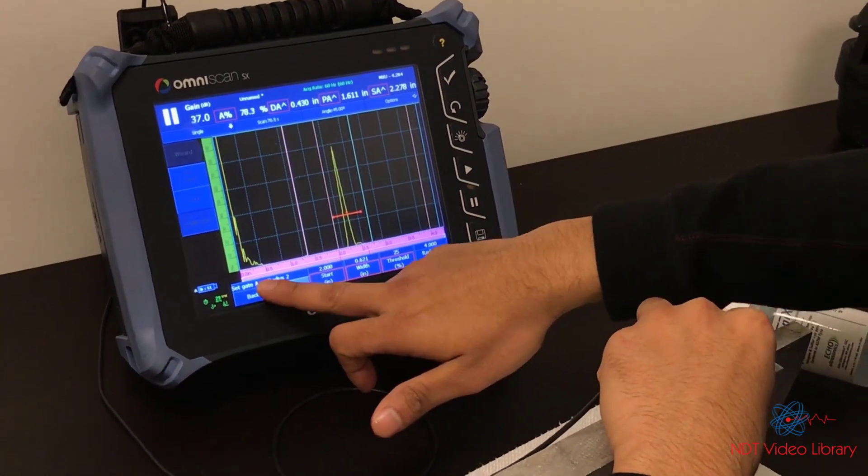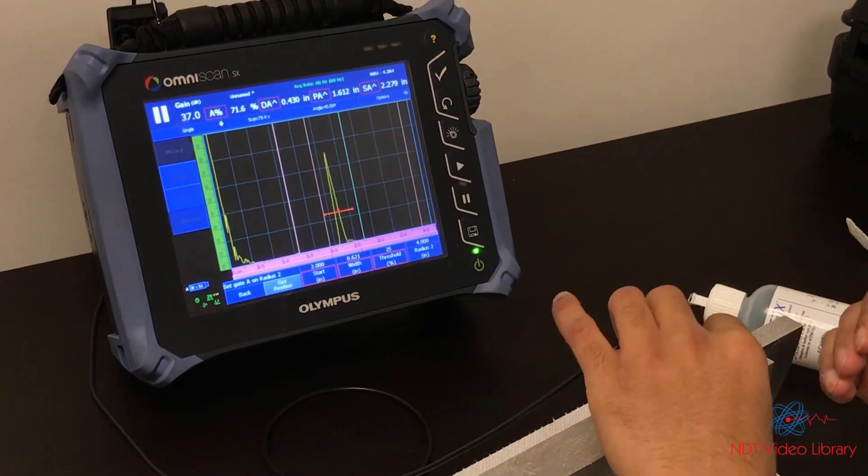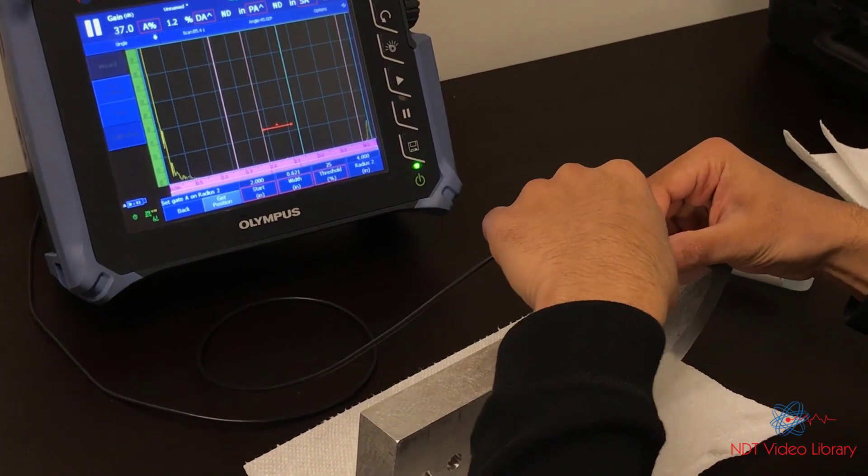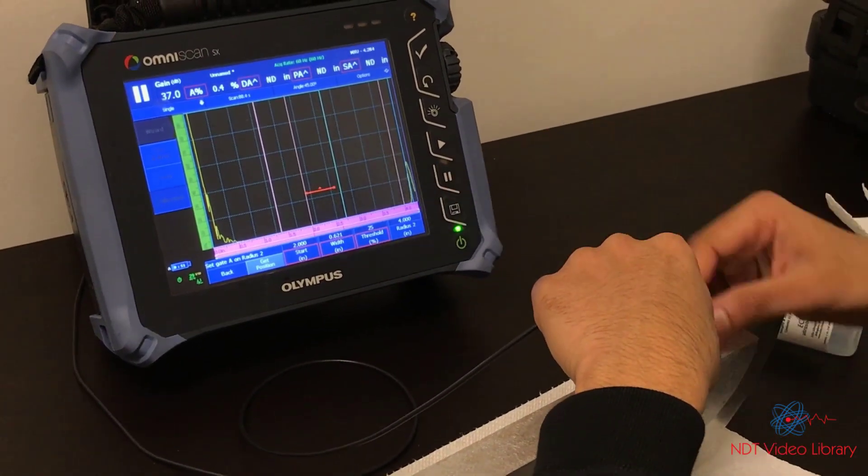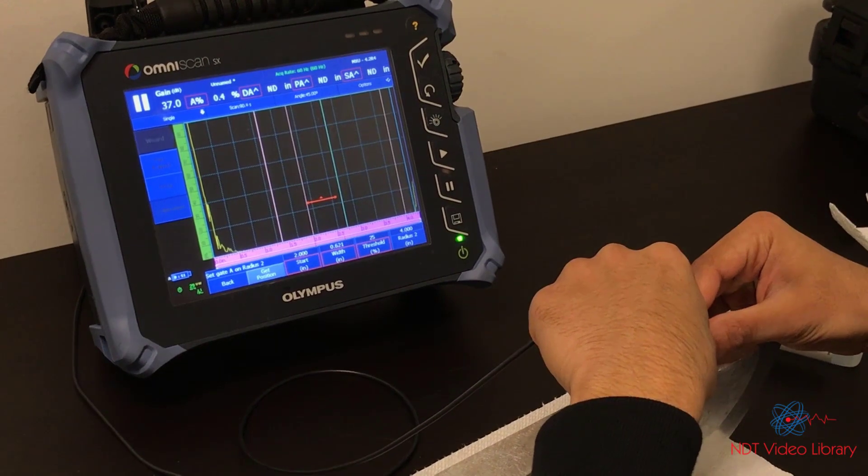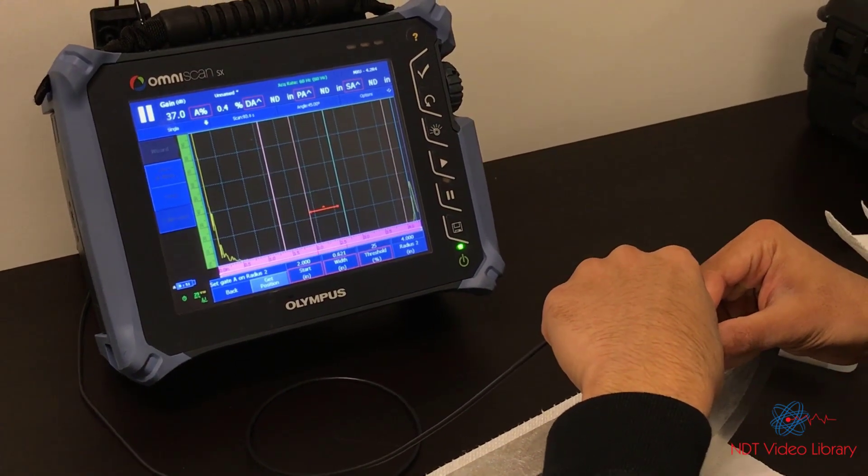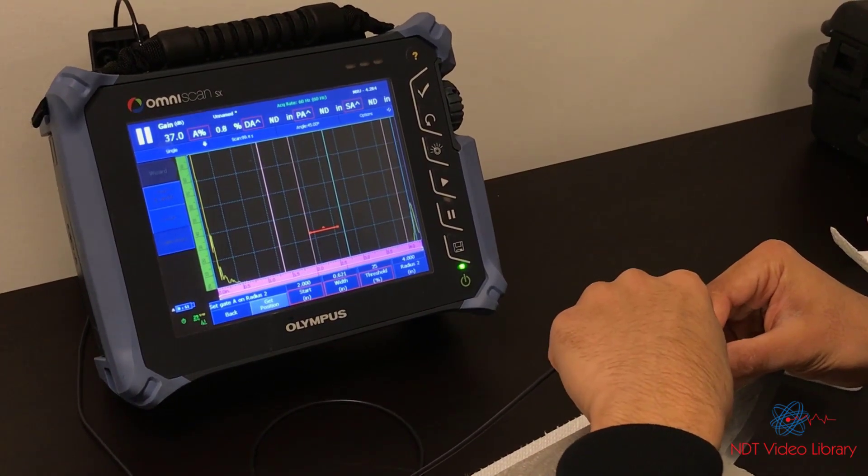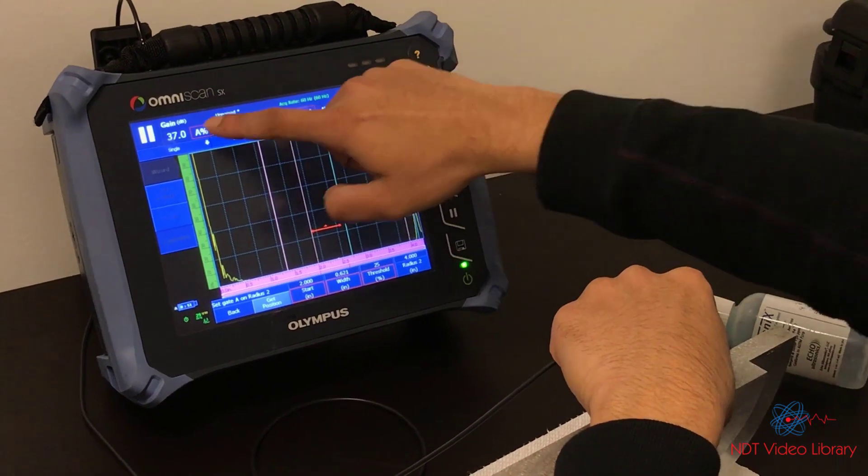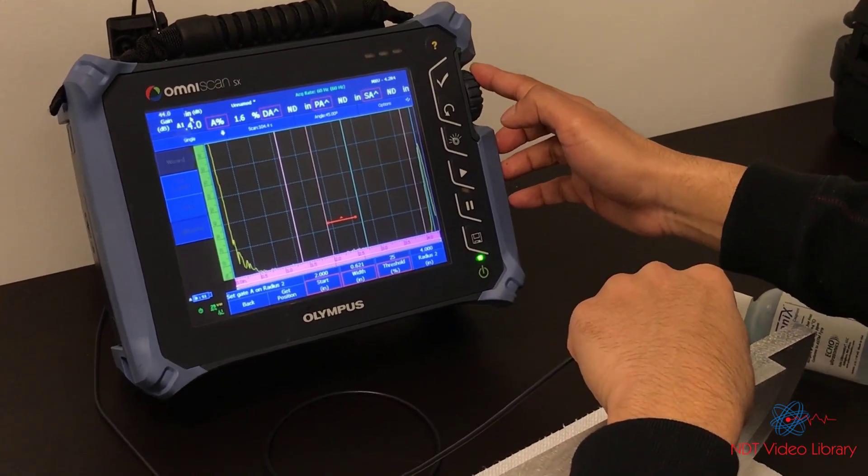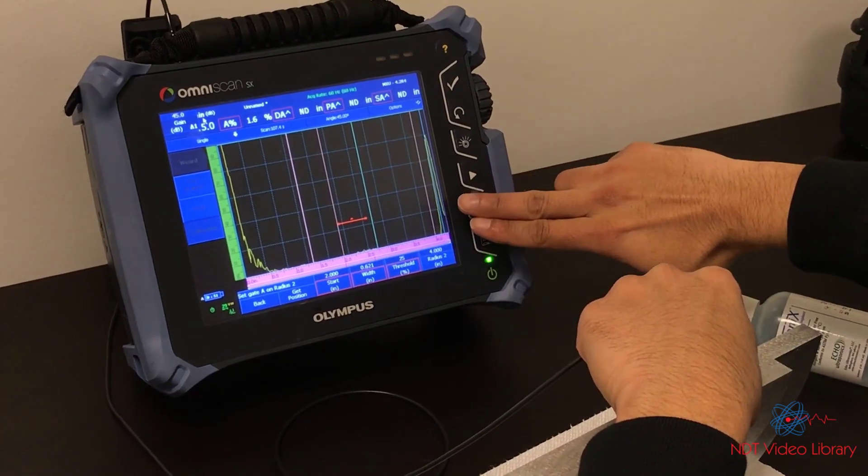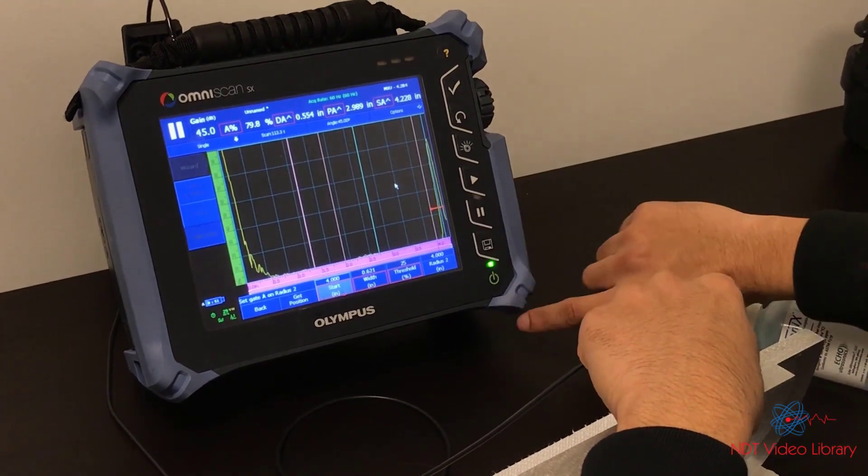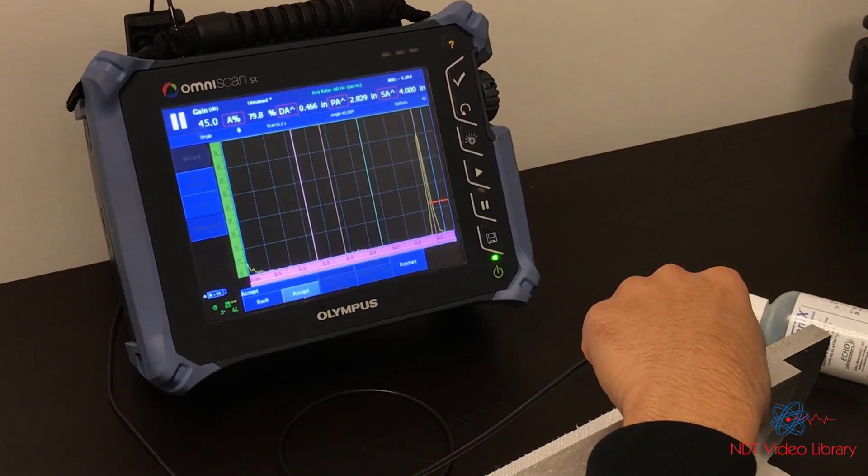Now it says set gate A on radius 2. Radius 2 is just the radius on the other side, which is 4 inch. You see that signal all the way at the end. That's your 4 inch signal. Try to maximize it. Right there. And then increase the decibels to 80%. To get position, move the gate on that signal and get position. That's it.